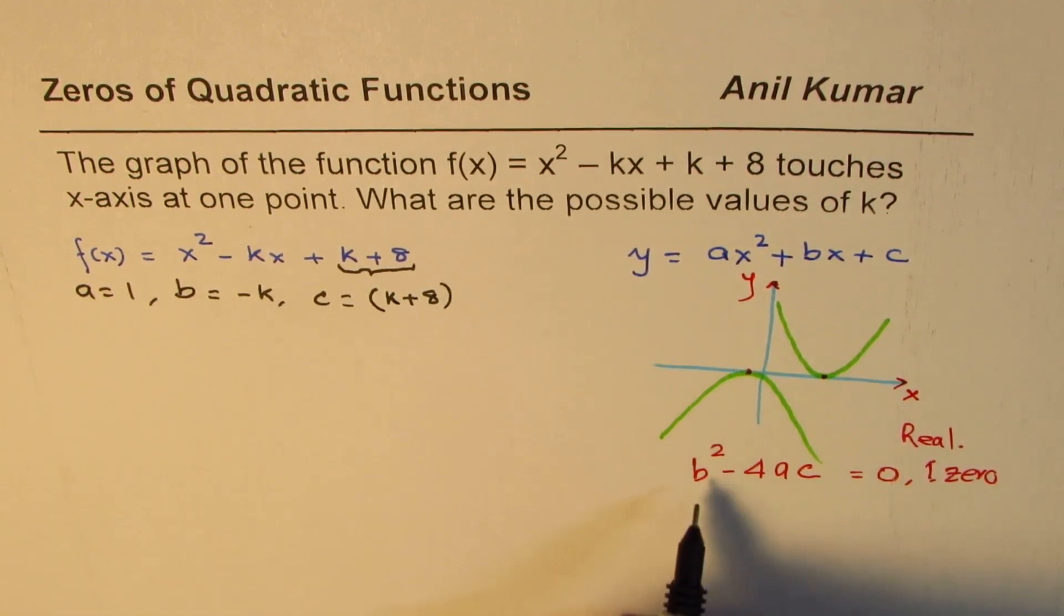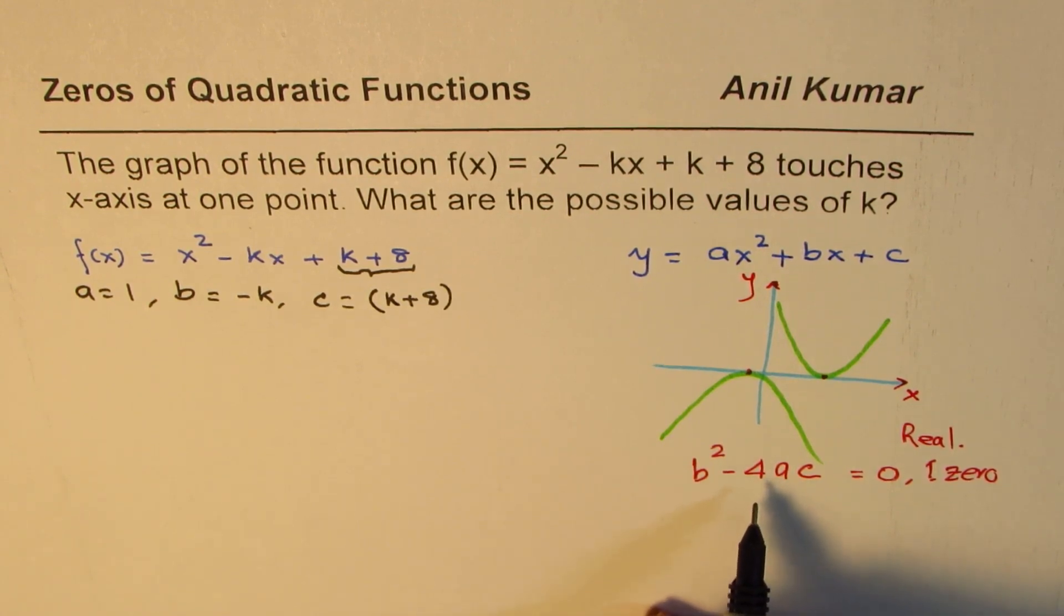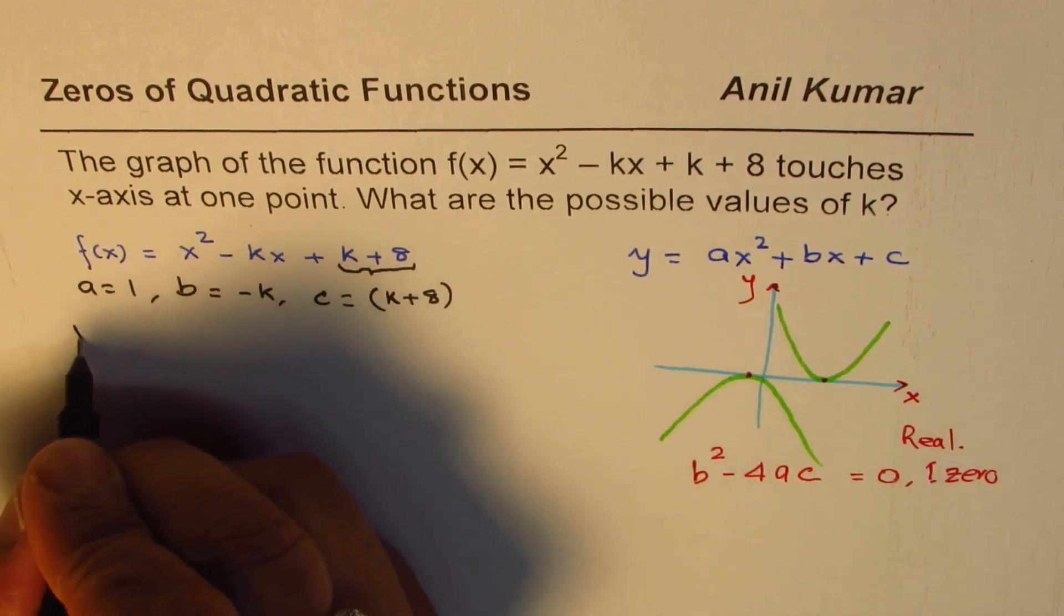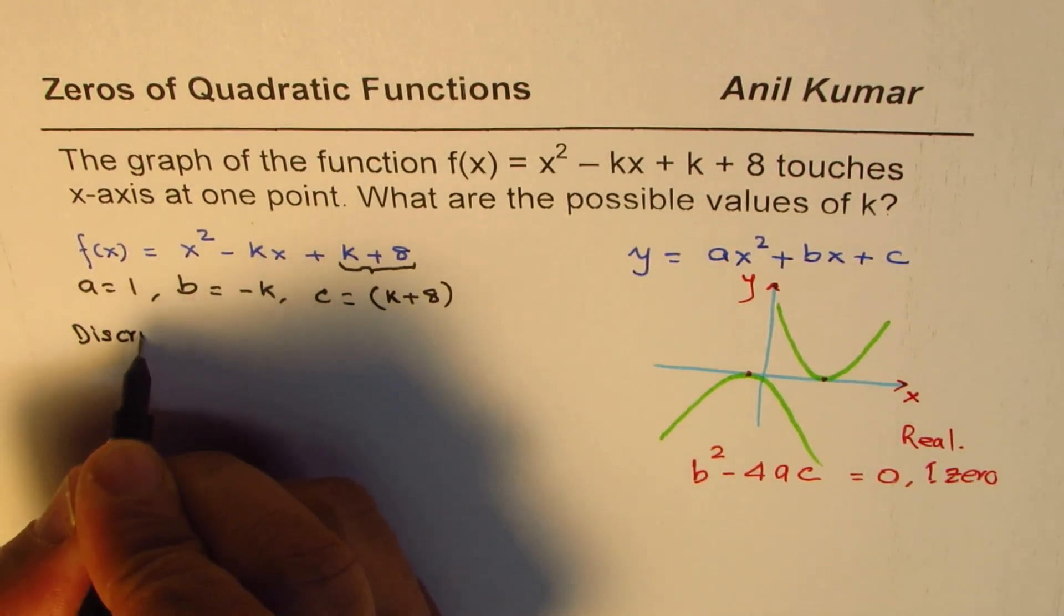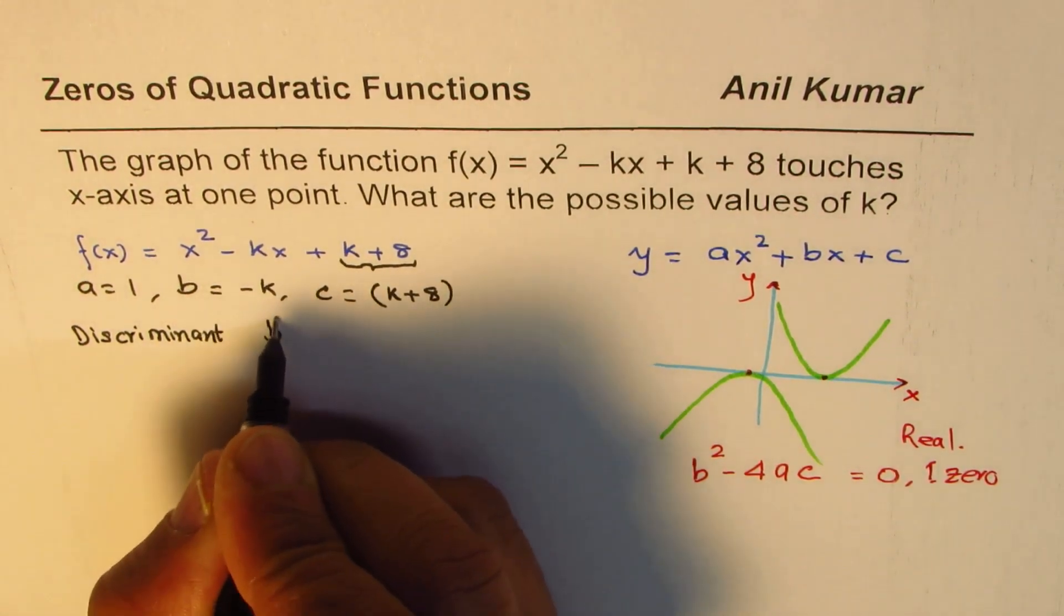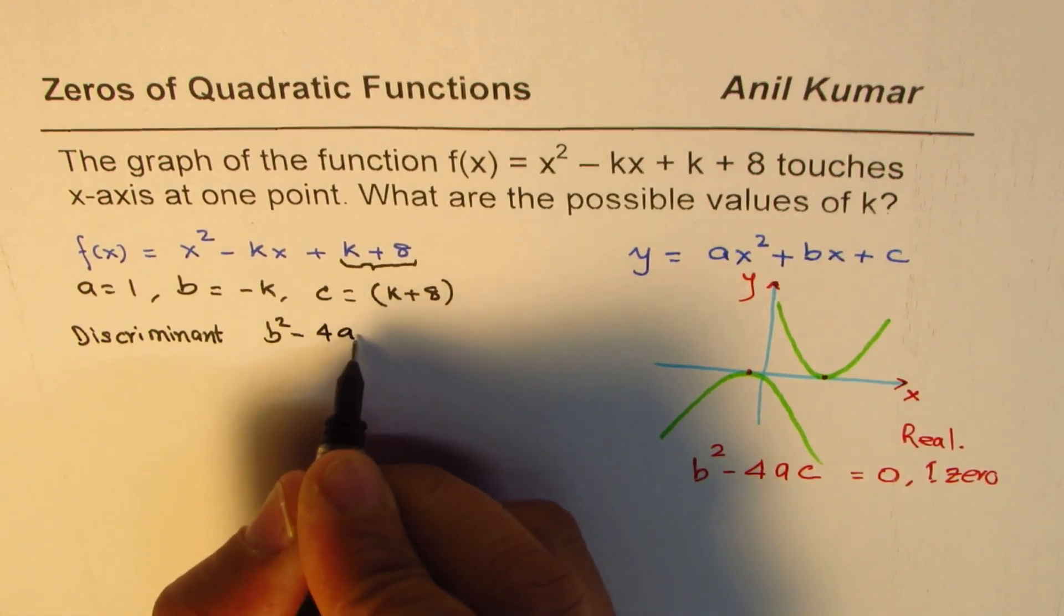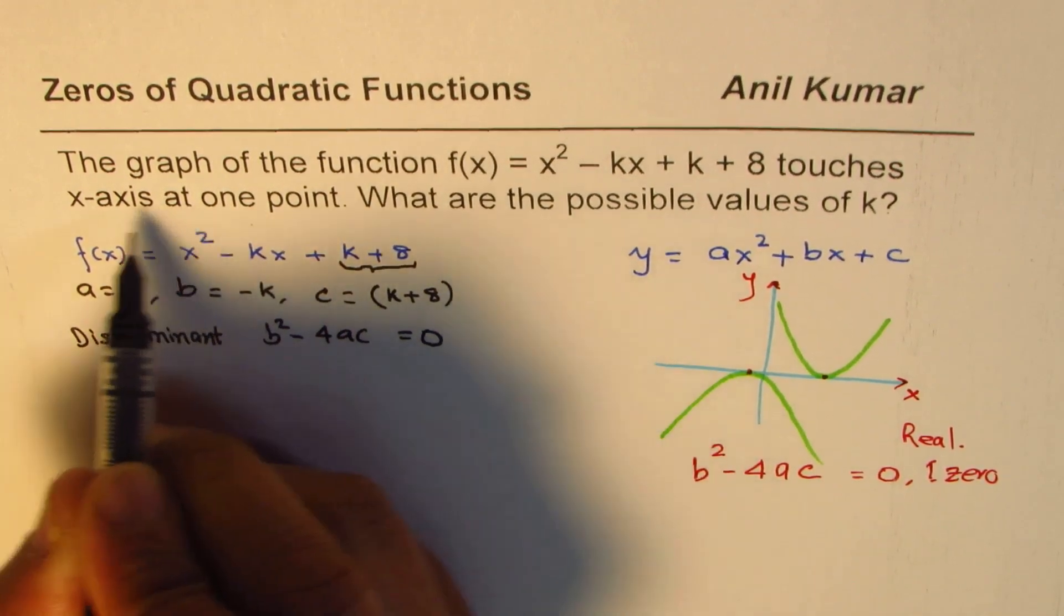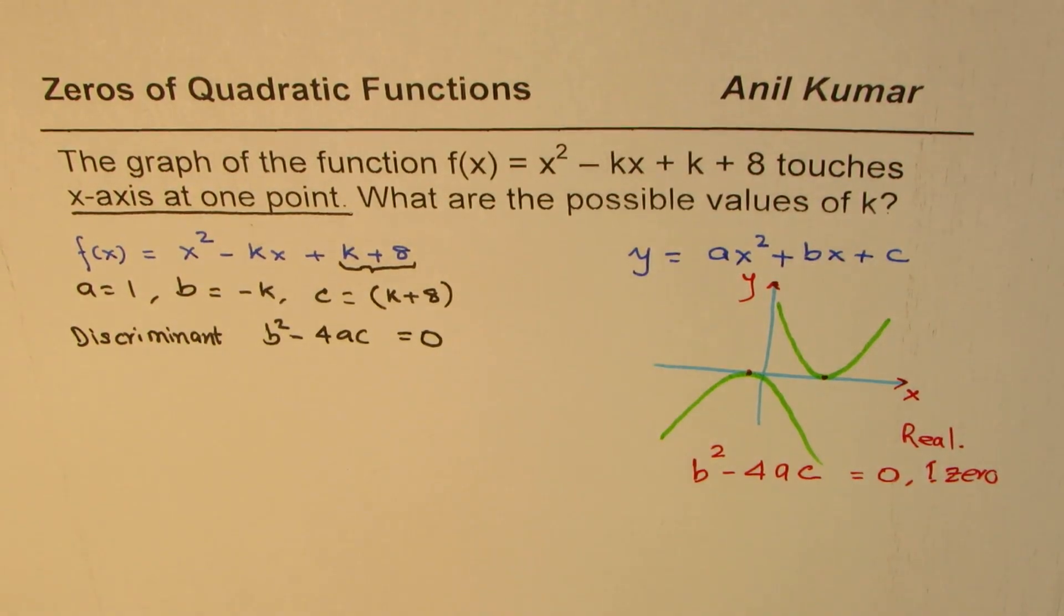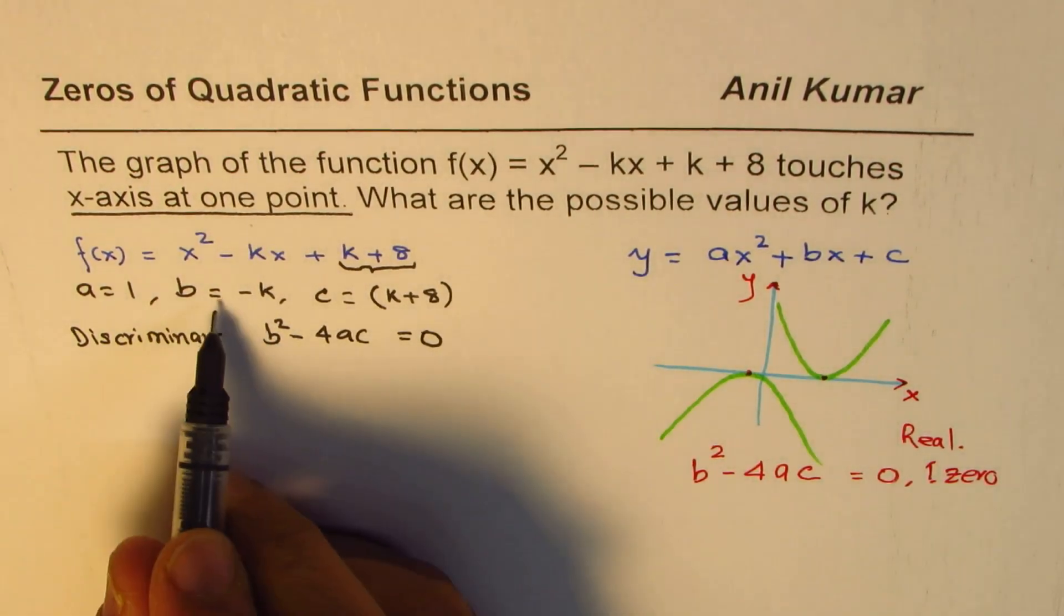Now we'll apply this formula, b squared minus 4ac. So we'll actually analyze the discriminant. So this is called the discriminant. b squared minus 4ac should be equal to 0 for the graph to touch x-axis at one point. So substitute the values.